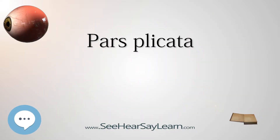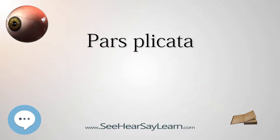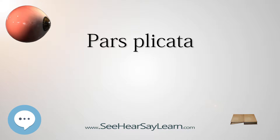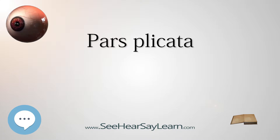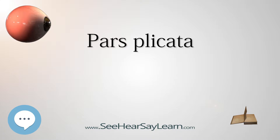The pars plicata — Latin for 'folded portion' — is the folded and most anterior portion of the ciliary body of an eye. The ciliary body is a part of the uvea, one of the three layers that comprise the eye.